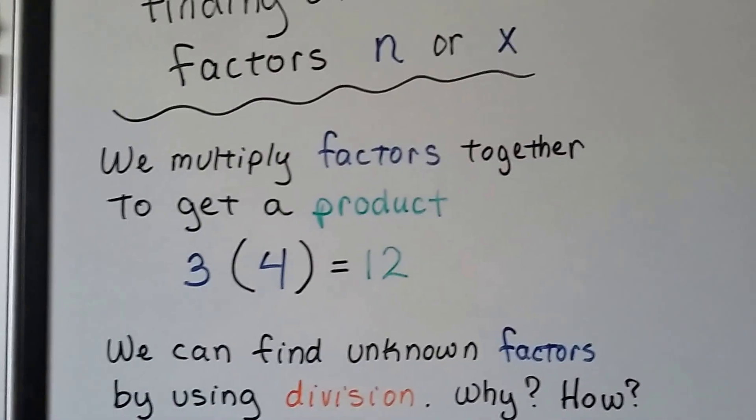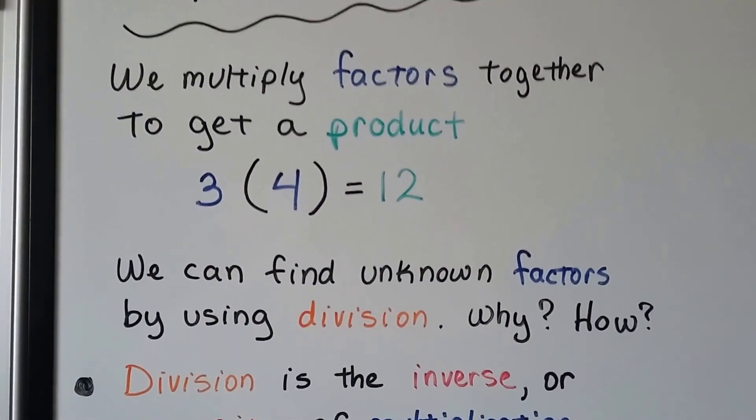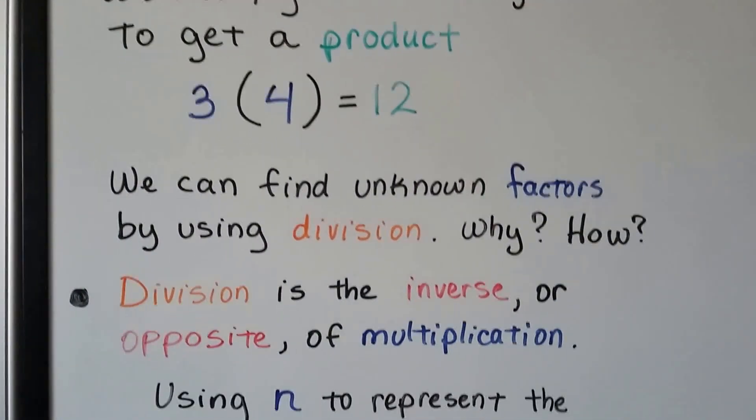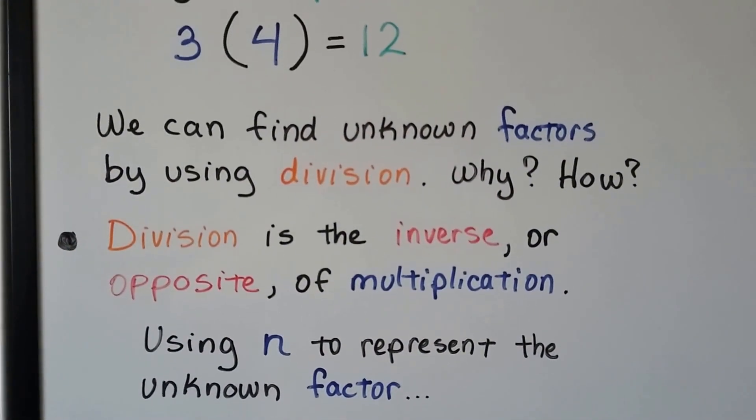When we multiply factors together to get a product, the 3 and 4 are factors, the 12 is the product. And we can find unknown factors by using division.